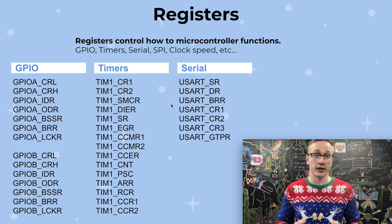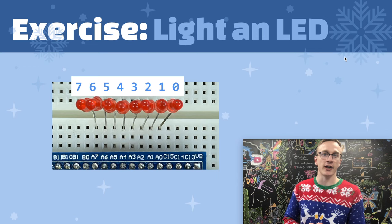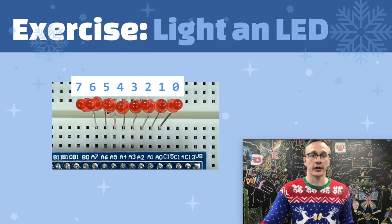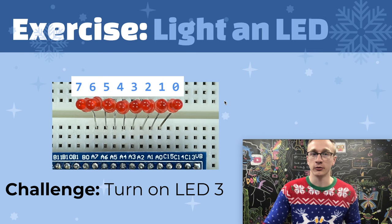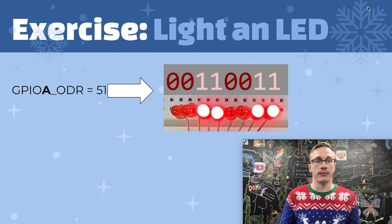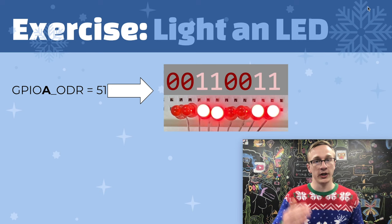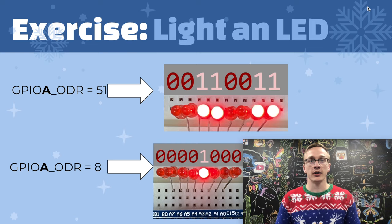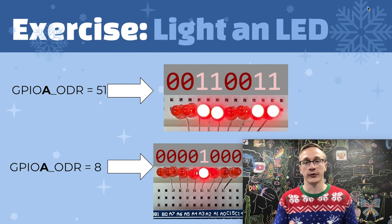Before we get any deeper into registers, let's do a quick exercise. Going back to these LEDs hooked up to pins A7 through A0 — labeled 7, 6, 5, 4, 3, 2, 1, 0 — what would I have to do to light up just LED 3? We've already come across port A, also known as the GPIOA Output Data Register, and we learned that storing the value 51 into that gives us a certain light pattern. So to light up just LED 3, all we need is a binary number with a 1 in the 3's place. The number 8 translates to 00001000, which will light up LED 3.